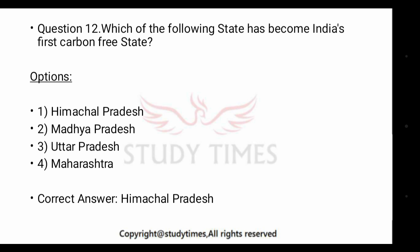Let's quickly know the CMs, governors, and capitals of the other options. The capital of Madhya Pradesh is Bhopal and the CM is Shivraj Singh Chauhan. The capital of Uttar Pradesh is Lucknow, the CM is Yogi Adityanath, and the Governor is Ramnath. The capital of Maharashtra is Mumbai, the CM is Devendra Fadnavis, and the Governor is C. Vidyasagar Rao.